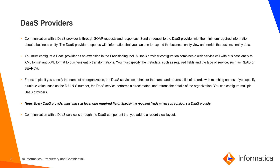You must specify metadata such as required fields and the type of service such as read or search. For example, if you specify the name of the organization, the DAST service searches for the name and returns a list of records with matching names. If you specify a unique value such as DUNS number, the DAST provider performs a direct match and returns the details of the organization. You can configure multiple DAST providers. Note: every DAST provider must have at least one required field; specify the required fields when you configure a DAST provider.